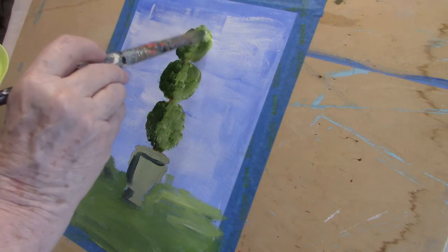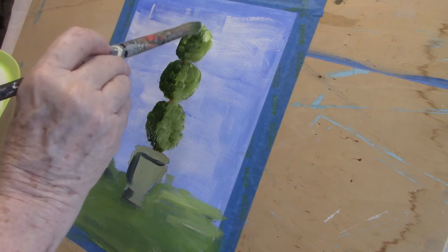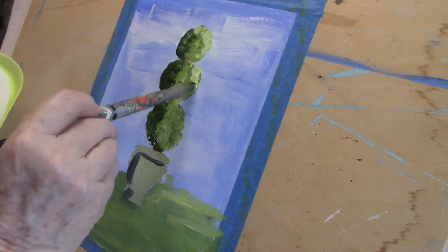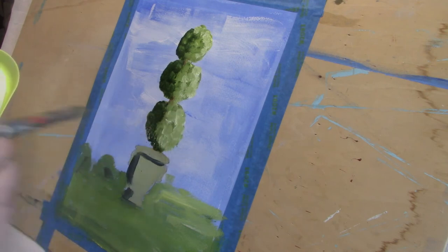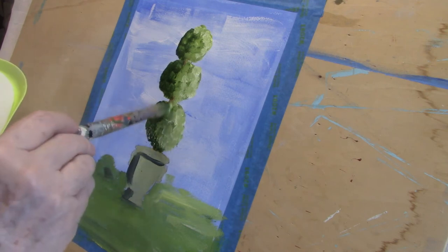With the shadow and the highlight in place, it gives a sense of roundness, of dimension to the topiary, which is what gives it a more realistic look.